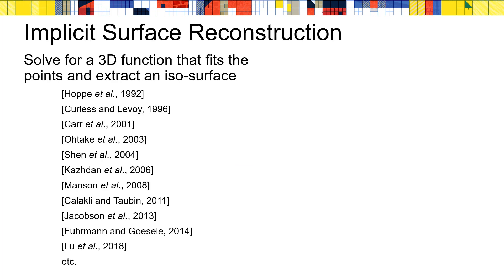In our work, we aim to incorporate the envelope constraints within an existing surface reconstruction approach. While there are many existing approaches, one that has proven to be particularly effective is implicit surface reconstruction. This approach first fits a 3D function to the input point set and then extracts the reconstructed surface as a level set of that function.